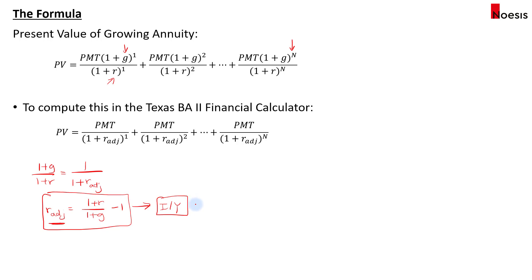This is one way around it — instead of trying to input the growth rate and discount rate separately, or calculating each year's cash flow and entering it into the cash flow worksheet (which is a lot of hassle, especially when N is large), these quick hacks make computation much faster.